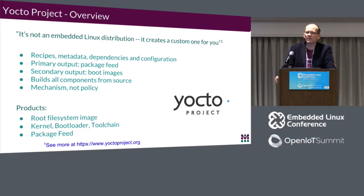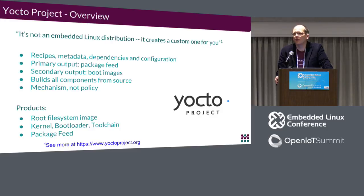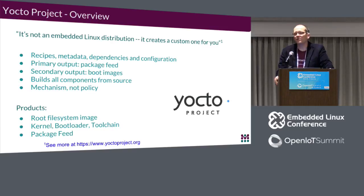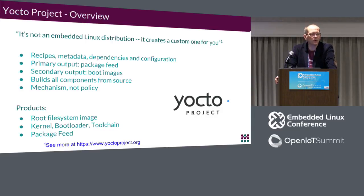With Yocto, you can install package management utilities directly on the target and still do things like installing packages dynamically at runtime using apt-get or IPK. It generally builds all components from source, though semiconductor manufacturers sometimes have binary blobs for GPU components. Its focus is more mechanism than policy — the default is sysvinit right now, but you can substitute your own policy. Products from a standard Yocto build include a root file system image (ext3/4, tarball, UBI), the kernel, bootloader, toolchain, and the package feed.